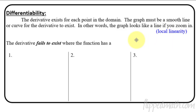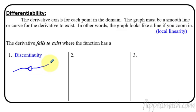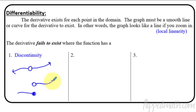So where are the places where the derivative does not exist? The first one is if there is a discontinuity. If you have some graph with a hole in it and then it continues on, at that point there's no derivative — if there's no graph, there's no derivative. If you zoom in really close it's not going to be a straight line; it's going to be a gap. Another example would be a jump discontinuity — there's still no derivative there because if you zoom in, the whole graph just skips.